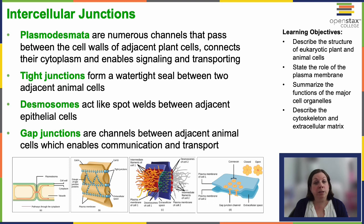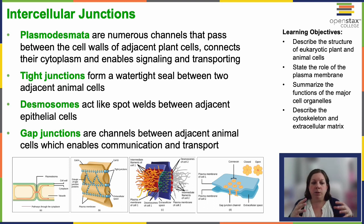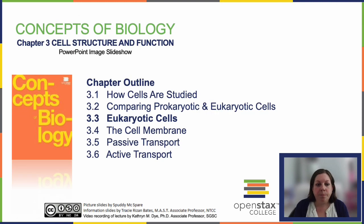Tight junctions join adjacent animal cells and hold them very close together. Desmosomes also join two animal cells together, and play an important role as connection points for internal cytoskeleton structures, helping the cell retain its structure and handle shearing pressure. We see a lot of these in skin and connective tissues. Gap junctions act as channels between animal cells — like little holes — through which signaling molecules can pass.